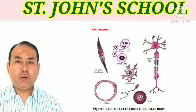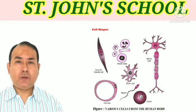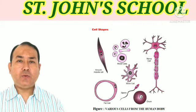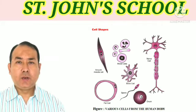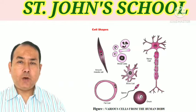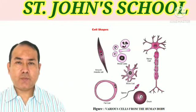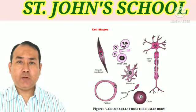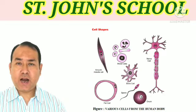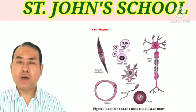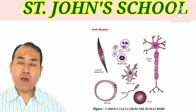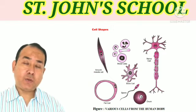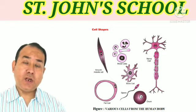If we talk about the cells of the living body, they assume various shapes. Some of them may be cuboidal, some may be flat, some may be irregular in shape without a definite form, some may be circular, some may be elongated, some may be polygonal, and some may be spindle shaped.